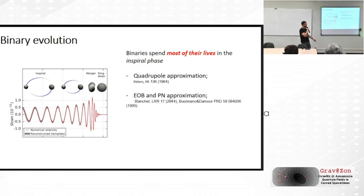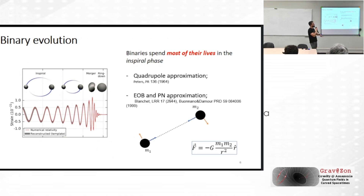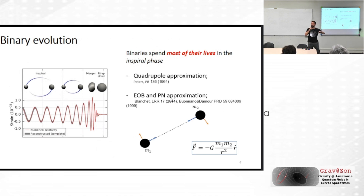There are extensions like the effective one-body model and post-Newtonian corrections, but in this work I will only focus on quadrupole approximations. Since we are only looking at quadrupole approximations and the binary components are far apart, it's safe to use Newtonian forces to dictate the motion. So the bodies are bound by Newtonian forces and emit gravitational waves, and this governs the evolution of your system.